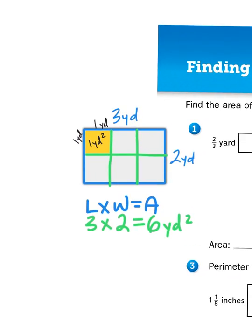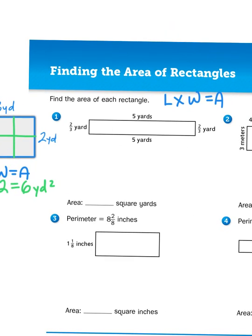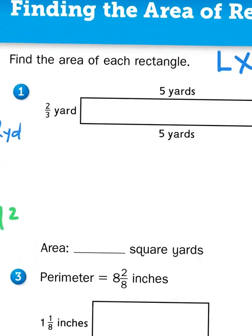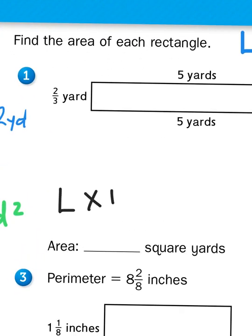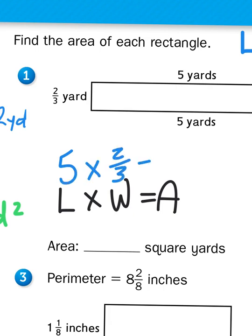That's what I'm doing when I'm determining area — how much space fills the inside of the shape. So now I'm going to tackle the problem: 5 yards times 2 thirds of a yard, because the length of this rectangle is 5 and the width is 2 thirds of a yard. Multiplication is just repeated addition — I'm basically counting 5 groups of 2 thirds together: 2 thirds plus 2 thirds plus 2 thirds plus 2 thirds plus 2 thirds.